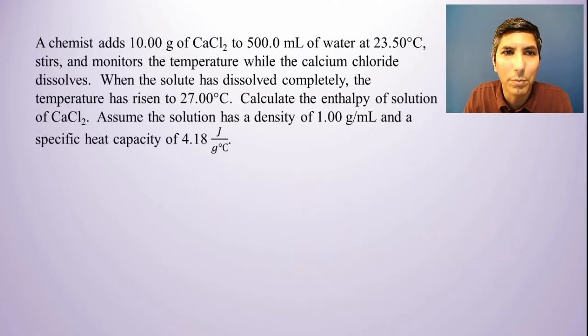Now let's try one more problem here together. This is a fairly lengthy question. It says a chemist adds 10.00 grams of calcium chloride to 500 milliliters of water at 23.50 degrees Celsius, stirs, and monitors the temperature while the calcium chloride dissolves. When the solute has dissolved completely, the temperature has risen to 27.00 degrees Celsius. Calculate the enthalpy of solution of calcium chloride. Assume the solution has a density of 1.00 grams per milliliter and a specific heat capacity of 4.18 joules per gram degree Celsius.